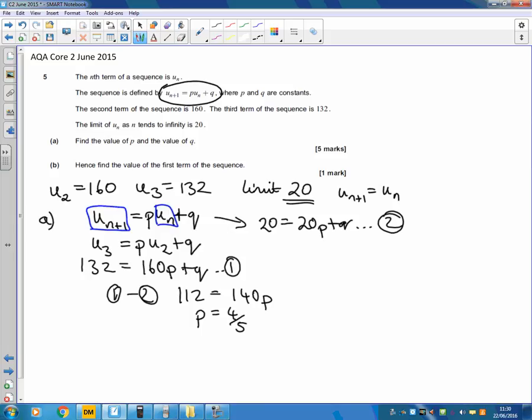Then you can use either equation. I'll use equation 2 because it has smaller numbers. So 20 equals 20 times p plus q, and we find that q equals 4. Now we've found our values for p and q, we can look at the next part.